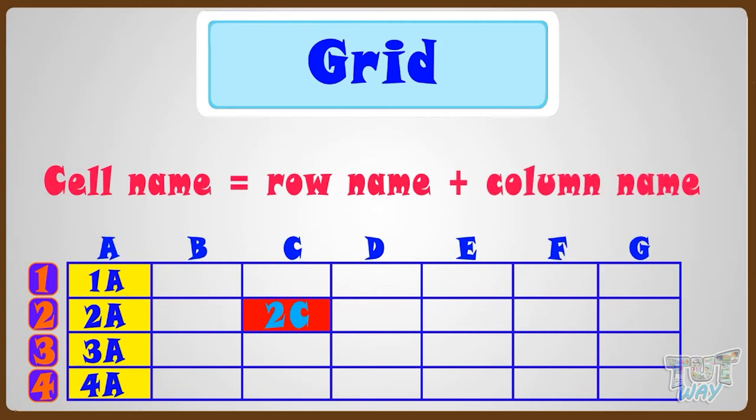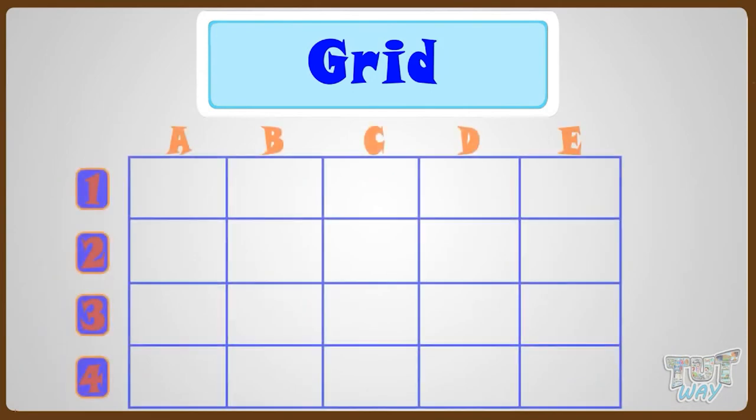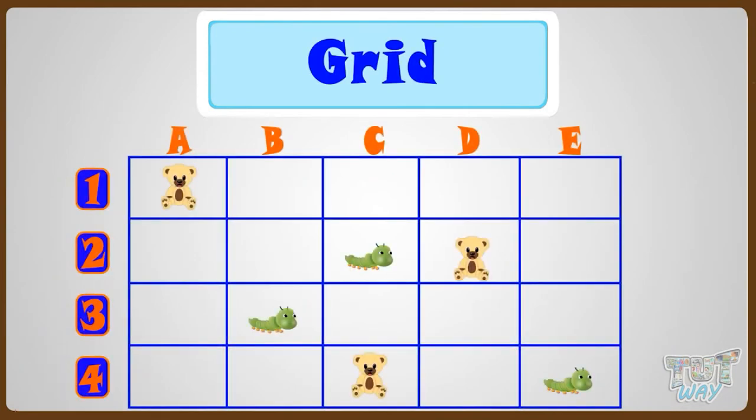Now let's learn more on grids. Here we have a grid. Let's name the locations of all the toy caterpillars. There are three caterpillars.